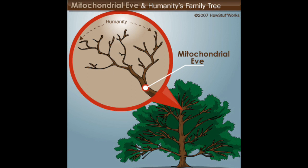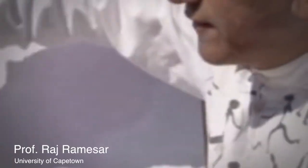If we trace our homo sapien DNA to the source — the common ancestral heritage — we are led to Africa. This is the tree of humanity.